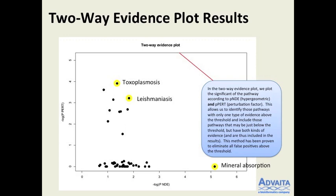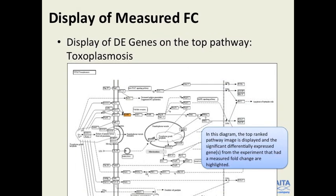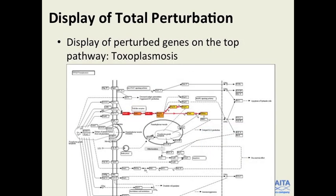You take the top pathway identified by PathwayExpress and it shows exactly the gene that is there. This is what you see on the screen — and when I show it the same way I did for IPA, looking at the total perturbation, you not only see MyD88, but you see the mechanism at play — with MyD88 being the source of all the action. I think that's pretty nice.